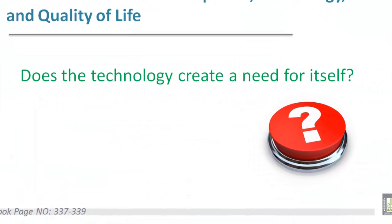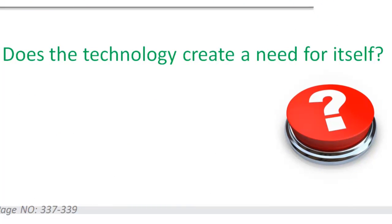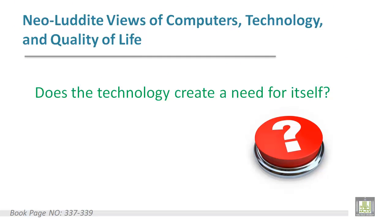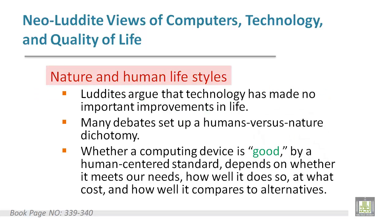Luddites argue like those who criticize capitalism. A common criticism of capitalism is that it survives by convincing us to buy products we don't need. Luddites argue similarly that technology causes production of things we don't need. Environmental and anti-technology groups use computers and the web, so they are against technology but are still using it.